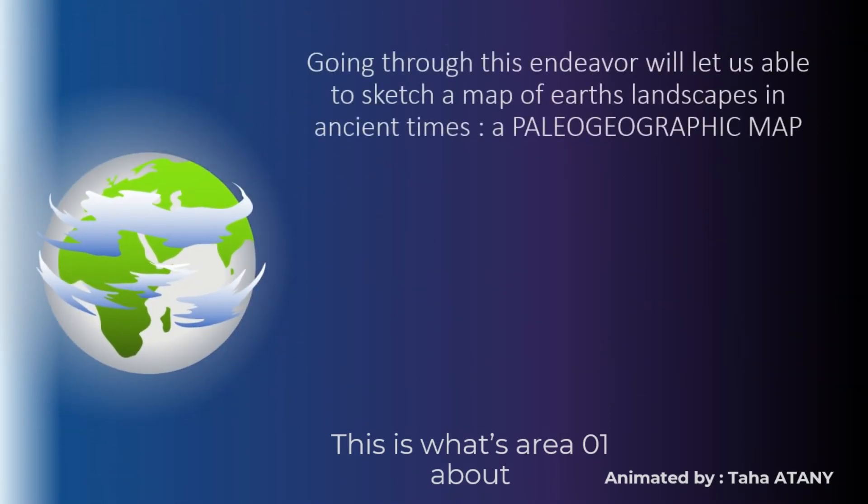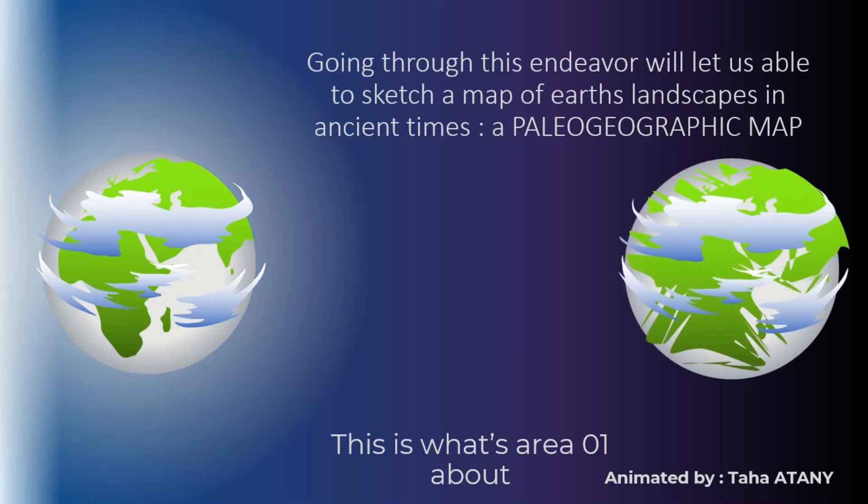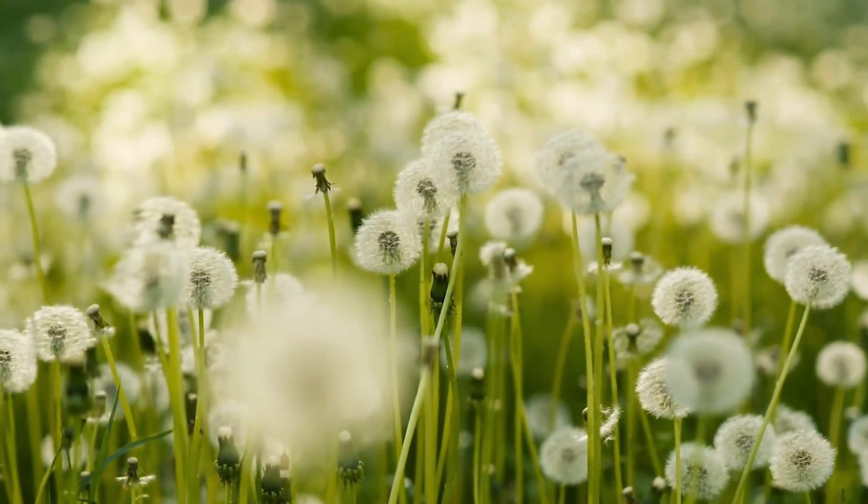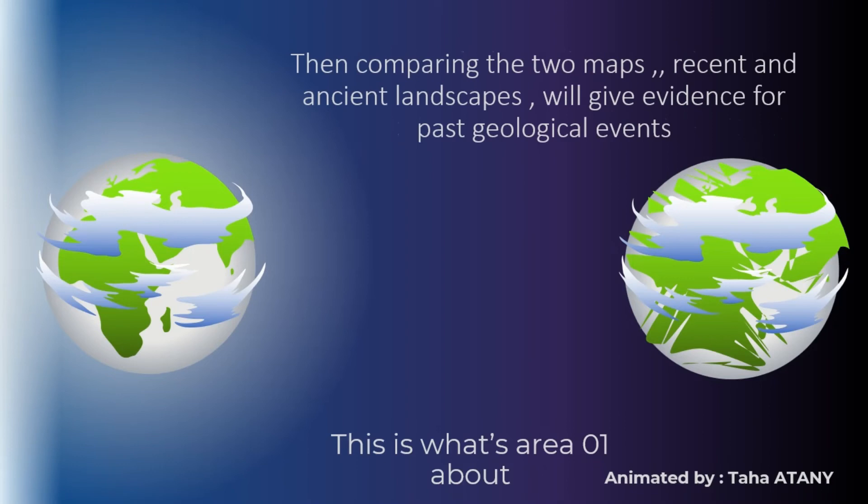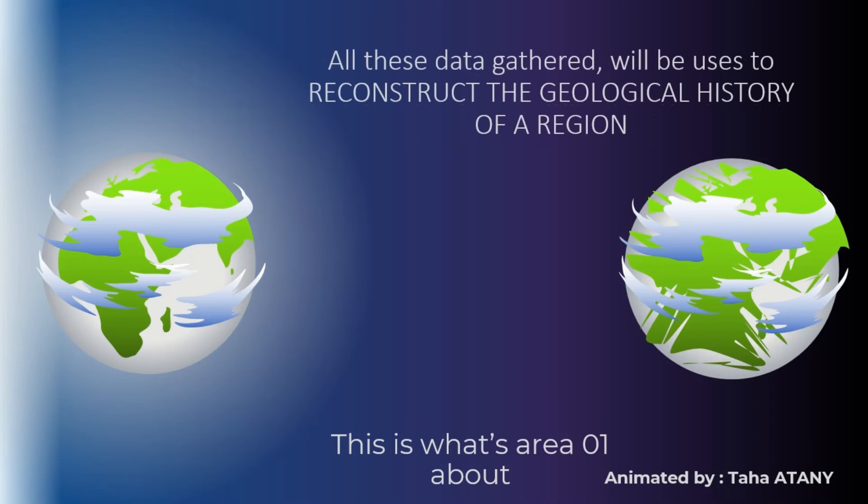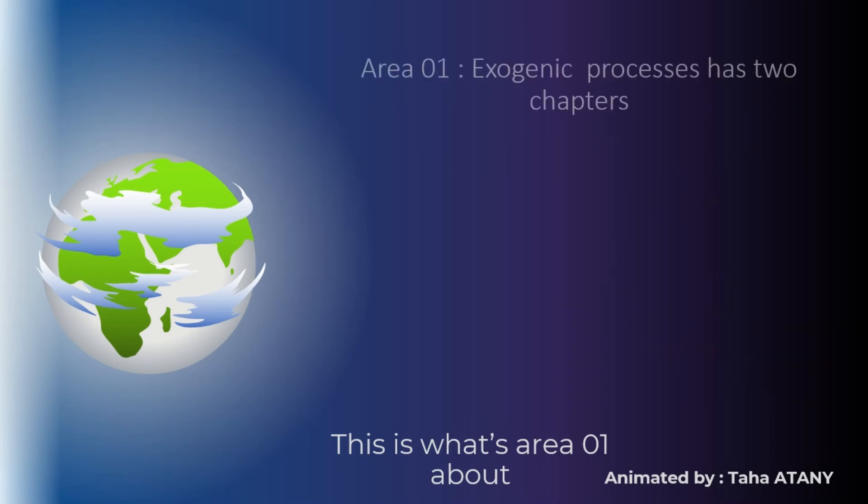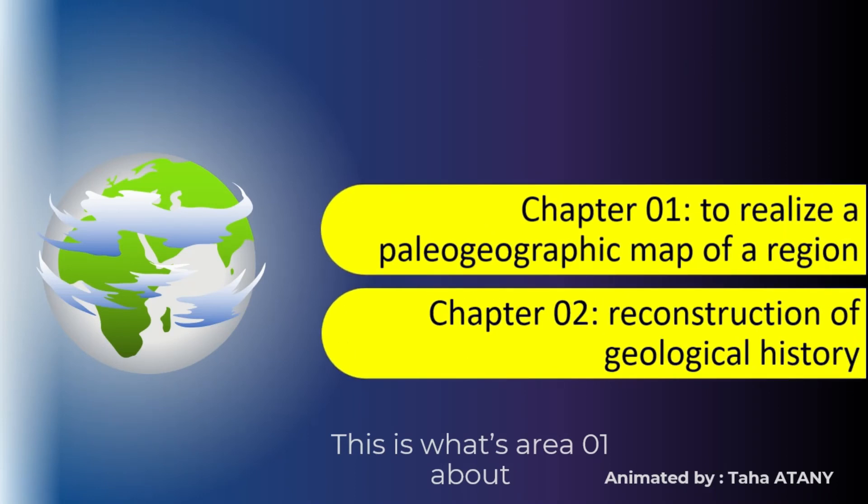We go back in time through two main phases. The first phase, lesson one, is to make an ancient map of an ancient environment called a paleogeographic map, and then we will compare this map with the actual current map. This pertains to discovering geological events that shaped our land. So we have two chapters: to realize a paleogeographic map of a region, and chapter two to reconstruct the geological history of a region. This is what area one is about.